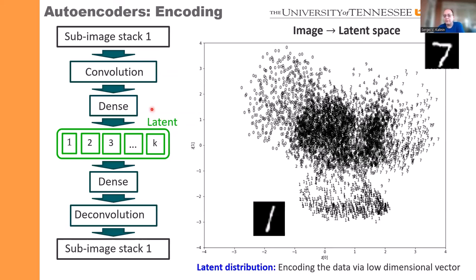Let's start with the basic definition of an autoencoder. Imagine a neural network where the input is some data — images, spectra, or anything else. We send it through a set of convolutional panels and dense layers, ultimately channeling it down to a latent layer. The key thing about this latent layer is that it has a relatively small dimension. Once we get this latent value, we decode it back to the original data format.